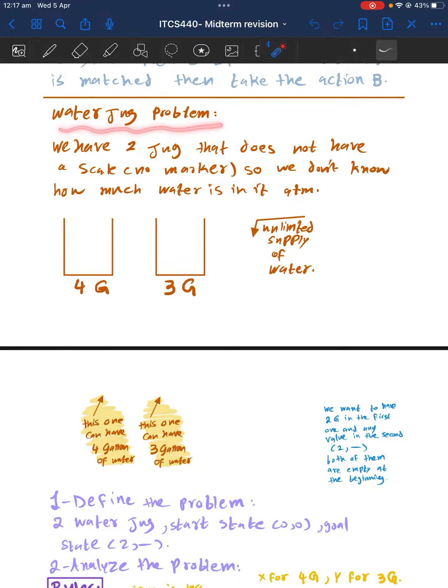The water jug problem. We have two jugs that do not have a scale, so we don't know how much water is in them. But we know that the first one can hold up to four gallons of water and the second one can hold up to three gallons of water. And we have unlimited supply of water, so we can fill both of them anytime.